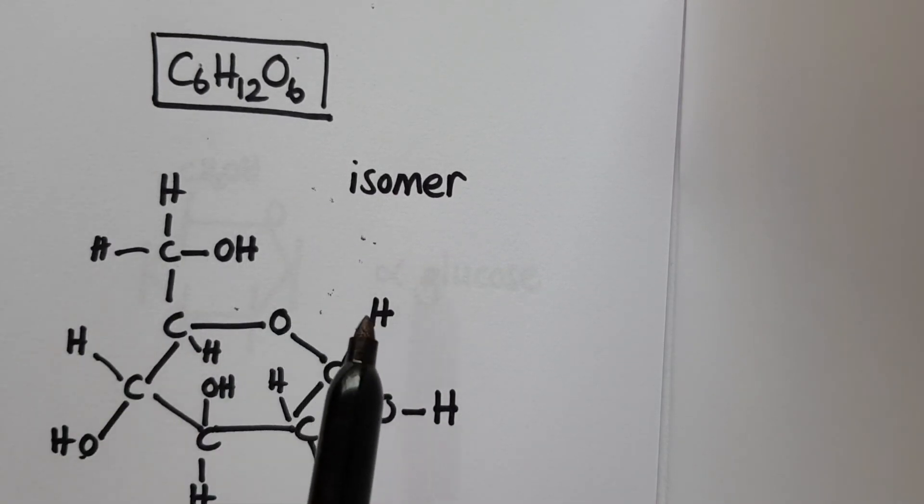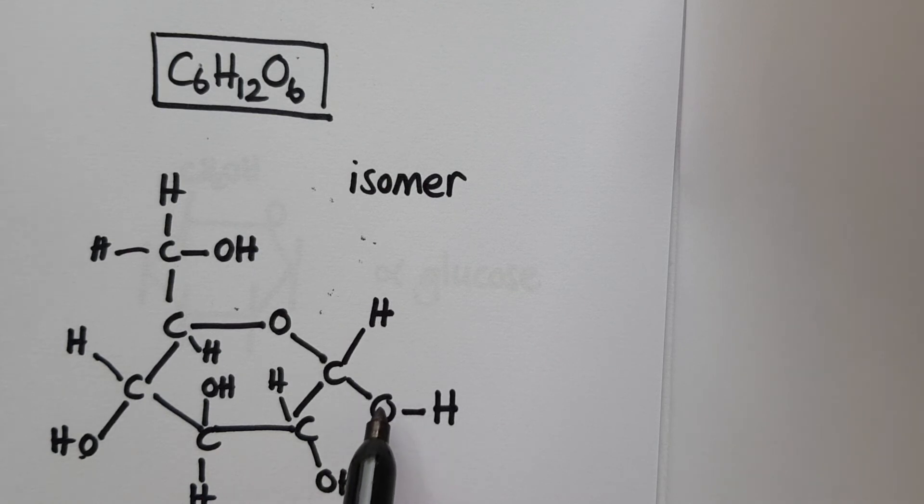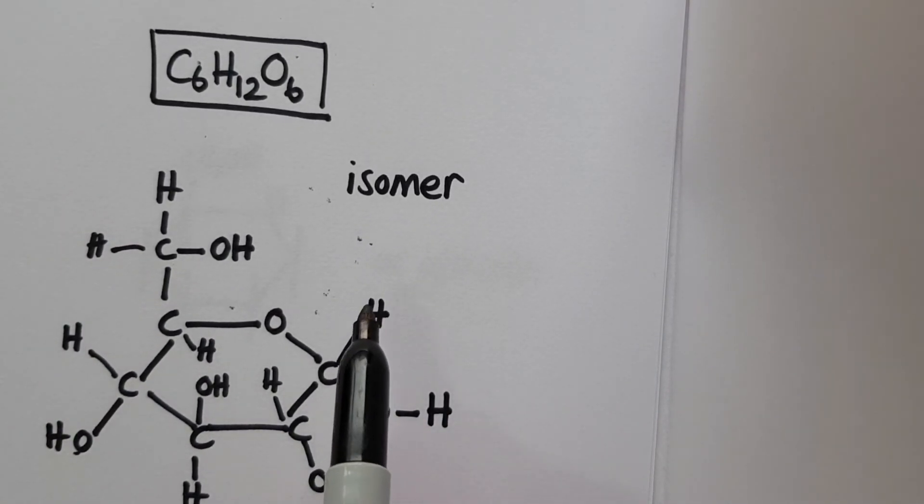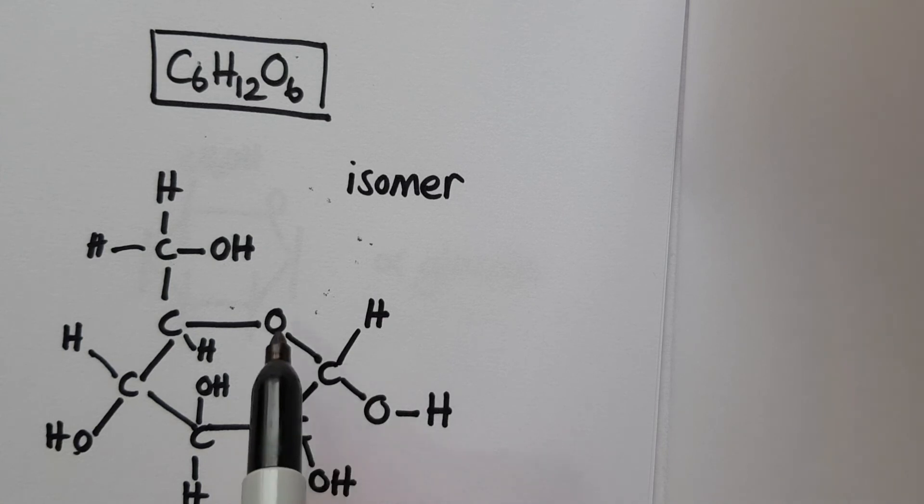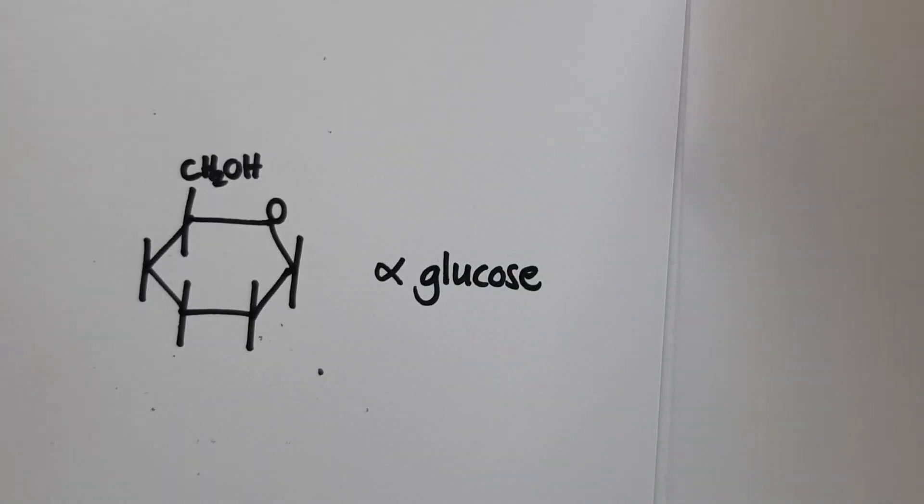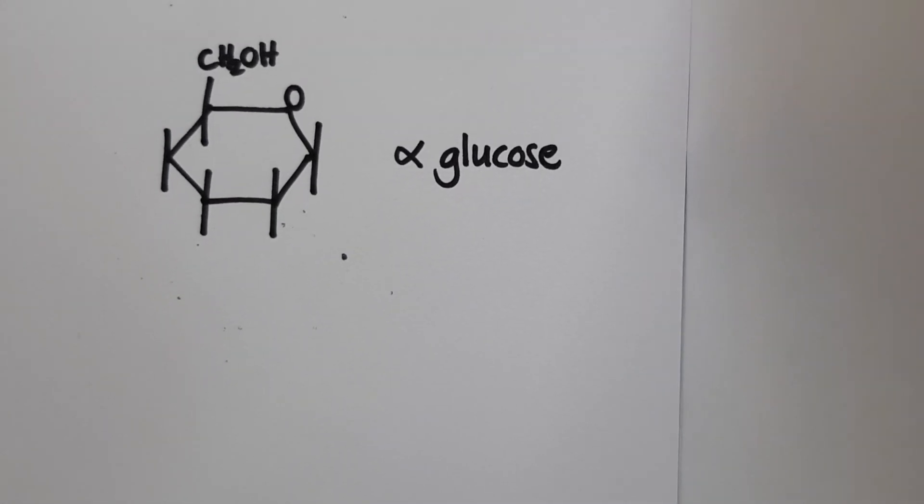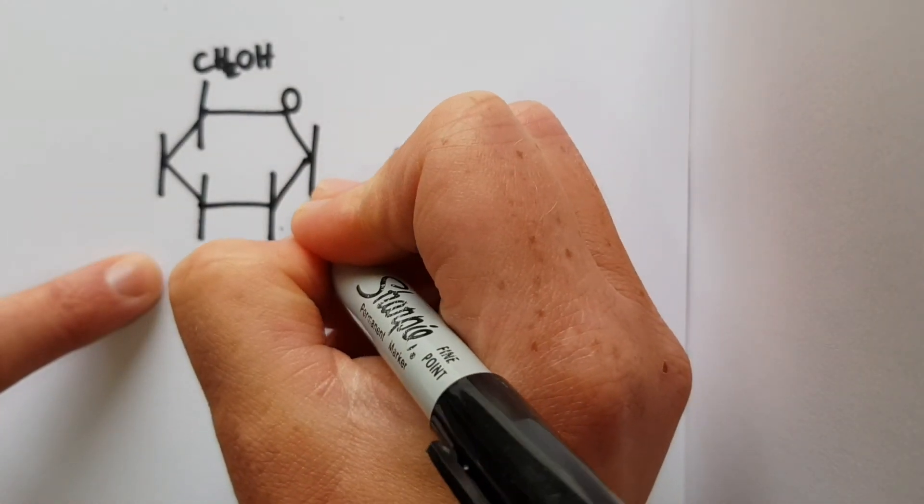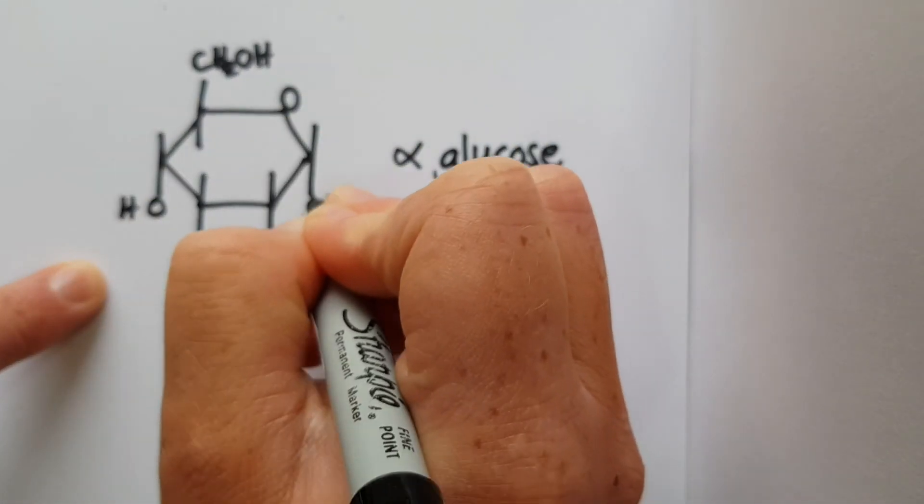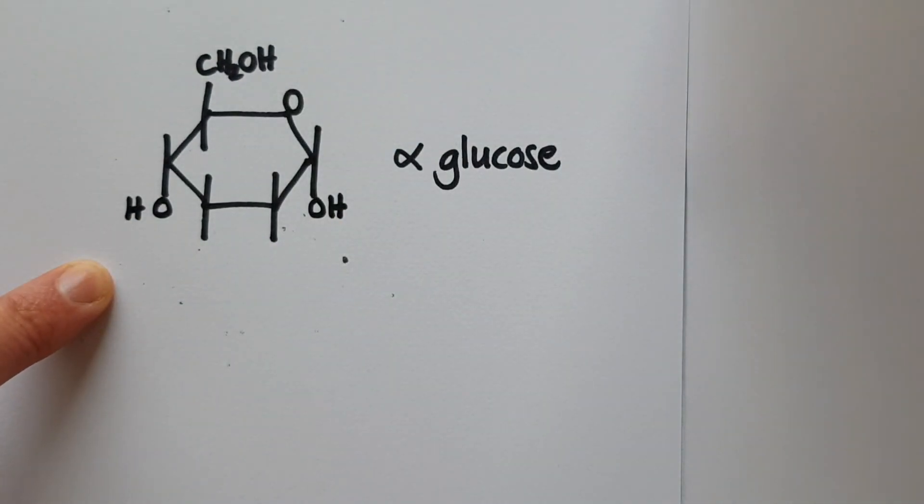So this whole ring structure is the same. The one difference is the position of this hydroxyl and hydrogen on carbon one. And actually, what you see in beta glucose is that this hydroxyl group is pointing upwards instead of downwards. It's pointing towards the oxygen rather than away from the oxygen. But everything else is identical. So when we're doing our abbreviated versions of these molecules, to show that this is alpha glucose, I would actually draw my hydroxyls on carbon one and carbon four to show that they're both pointing downwards and to show me that that's alpha glucose.